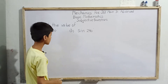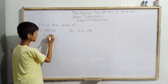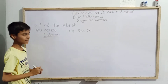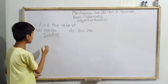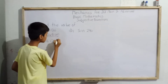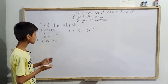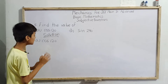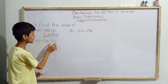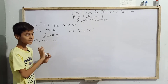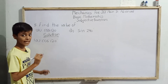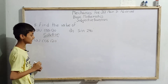Our solution starts with part (a): cos 120°. We have to find the value of cos 120°. While solving such types of questions, we have to make sure we are thinking in terms of 180° — which number added to 180° will give us 120°.